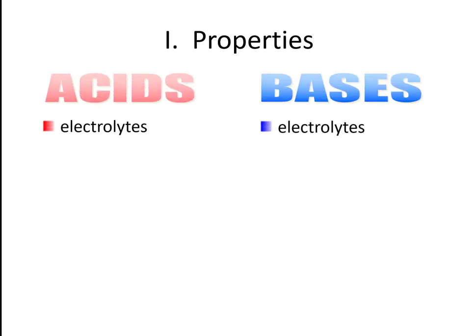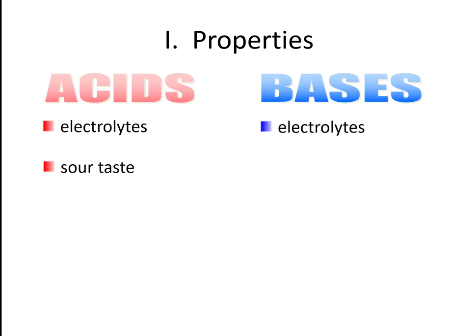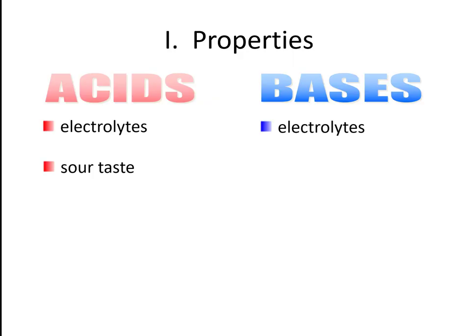First off, acids and bases are both electrolytes, which means that they both disassociate in water to produce mobile ions which can conduct electricity. Acids generally taste sour — think about common acids that you might have encountered in the kitchen like lemon juice or vinegar. They generally taste sour.